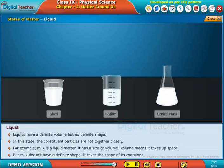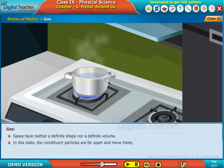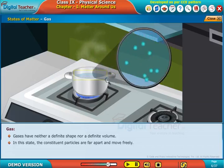It takes the shape of its container. Gases have neither a definite shape nor a definite volume. In this state, the constituent particles are far apart and move freely.